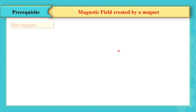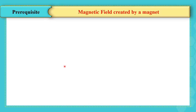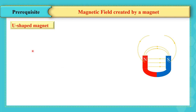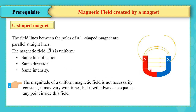In the case of a bar magnet, the magnetic field lines pass through the magnet from S to N inside the magnet. The magnitude of the magnetic field decreases as you move away from the magnet. A U-shaped magnet creates a uniform magnetic field between its poles, since the field lines are parallel and of the same magnitude and direction. Note that the magnitude of a uniform magnetic field is not necessarily constant — it may vary with time, but will always be equal at any point inside this field.